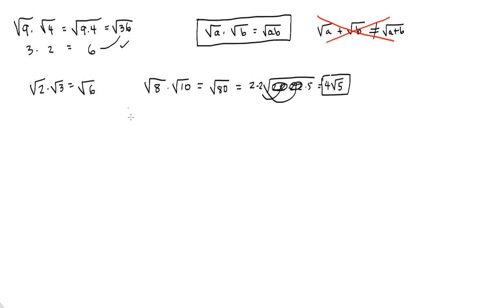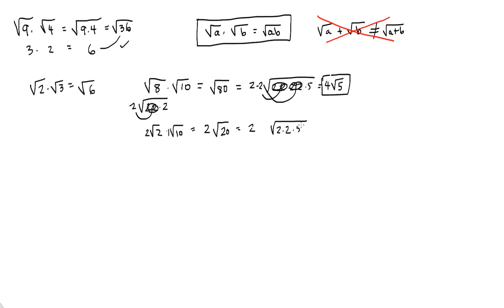Is there another way to do this? Sure. We could simplify radical 8 first: 2 times 2 times 2, pull out a 2 to get 2 radical 2, then multiply by radical 10. That gives 2 times radical 20. Radical 20 is 2 times 2 times 5 — pull out a 2 — and we get the same answer: 4 radical 5. So it doesn't matter whether you multiply first or simplify first. I tend to just multiply right away and simplify at the end, as it often saves a step.